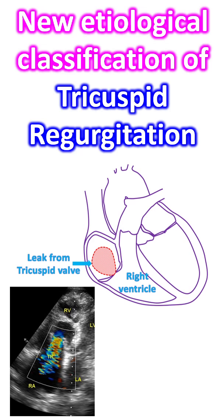Atrial secondary TR is due to right atrial or tricuspid annular dilatation, which could be related to age, atrial fibrillation, or heart failure with preserved ejection fraction.